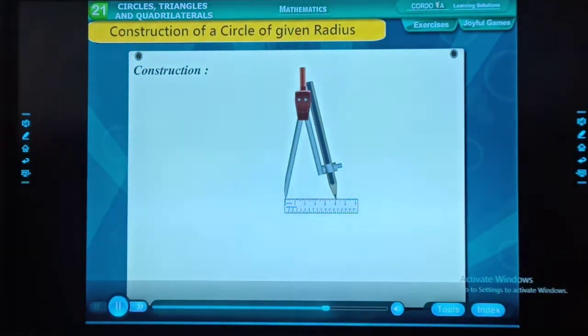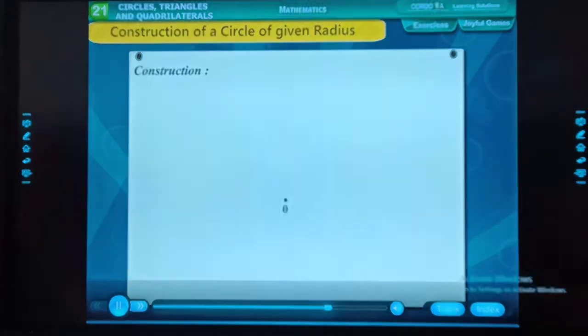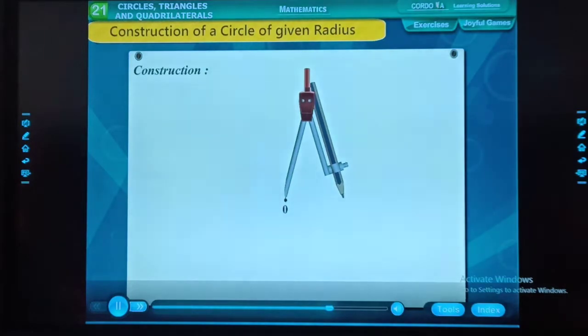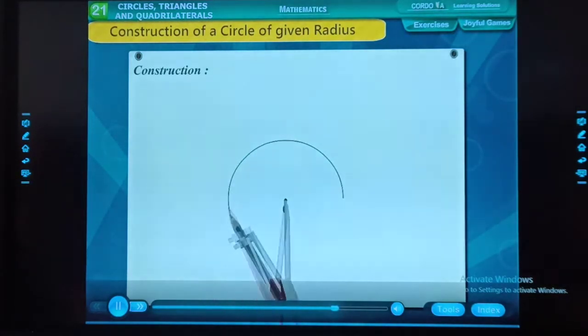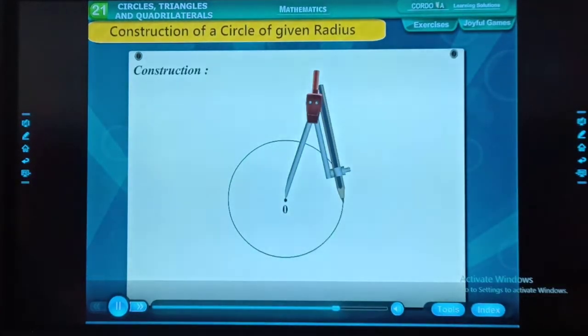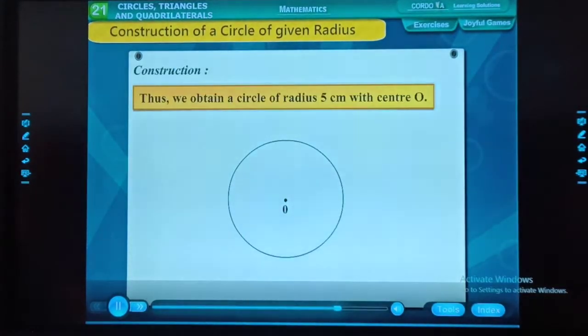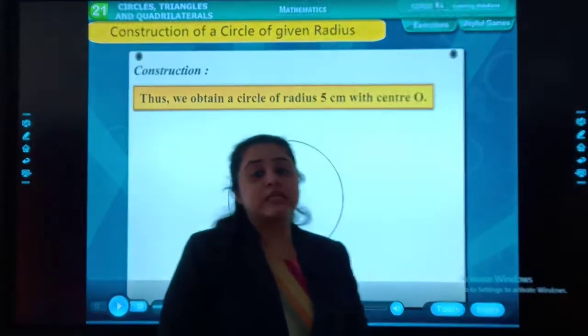By opening the compass as shown in the figure below, mark a point O on the plane of the paper without changing the angle between the two arms. Place the sharp metal tip on the paper at point O. Point O is the center of the circle. Move the pencil around, holding its top such that the pencil traces a circle. Thus, we obtain a circle of radius 5 cm with center O. Students, in this, you have to take two to three points proper.